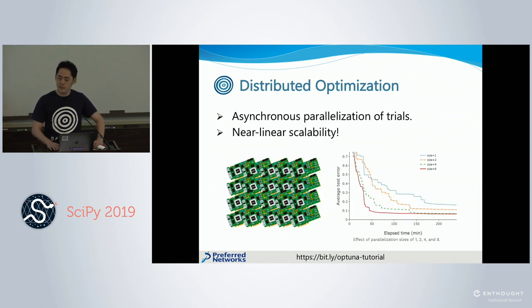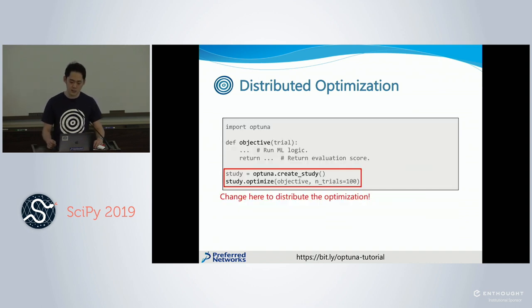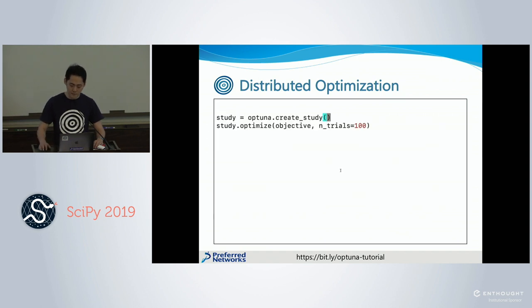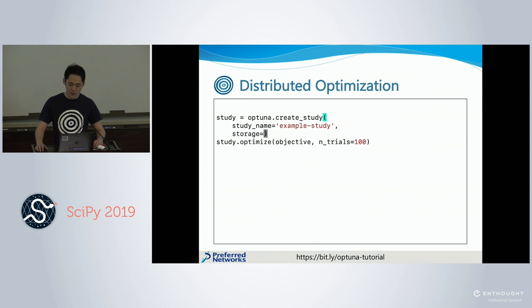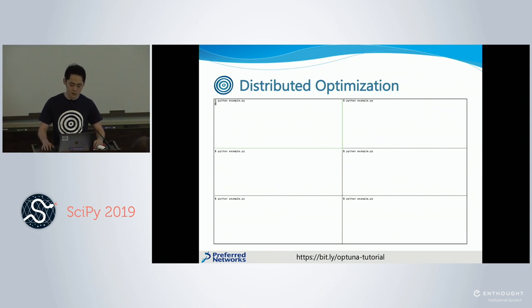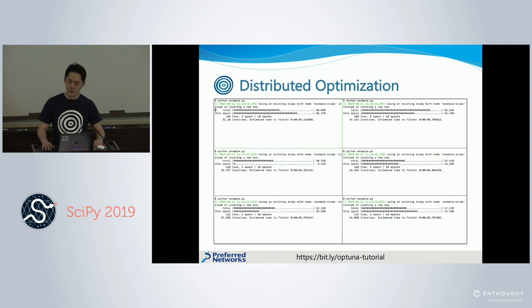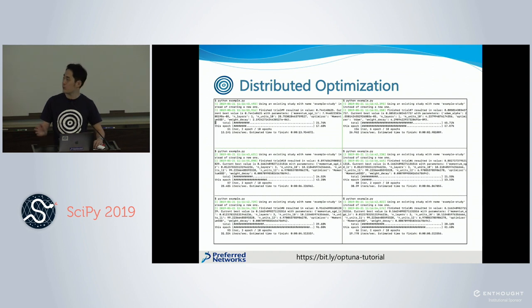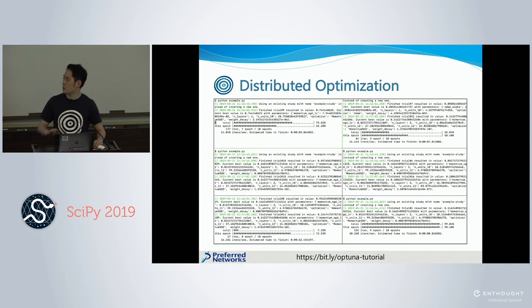OpTune provides a very easy mechanism to distribute the optimization. If you have multiple machines, you can simultaneously run multiple trials. It can be asynchronous and shows near-linear scalability. To set up distributed optimization, you just need to change two lines of your code. You need to put the name of the optimization experiment and the URL of the central database into the script. After that, just run your script from multiple processes or machines, and workers automatically share the history of optimization and run distributed optimization based on that history.